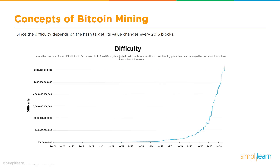Since difficulty depends on the hash target, its value keeps changing after every 2,016 blocks. From the inception of Bitcoin in 2009 to today, difficulty has increased exponentially and continues to grow — meaning the computing power required for mining today is far greater than what was needed in 2009.